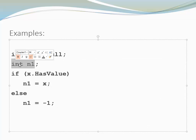So in this case, I create a variable n1 of type integer. I check whether my x has a value. If that is the case, I'm going to assign the integer value to n1. Otherwise, if x happens to be null, I'm going to assign minus 1 to my variable n1.